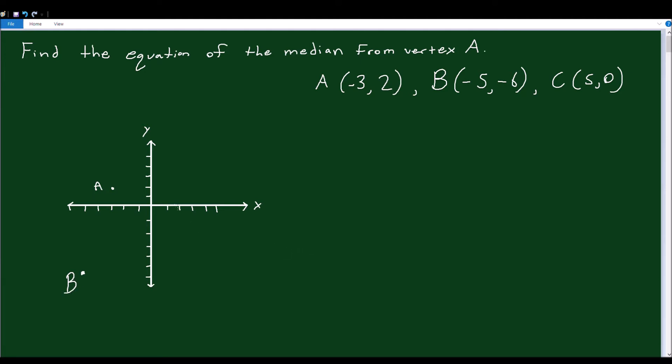C is 5, 0. So 1, 2, 3, 4, 5. So right here. So we can connect these dots together. A to B, B to C, and A to C. So now we have a triangle.